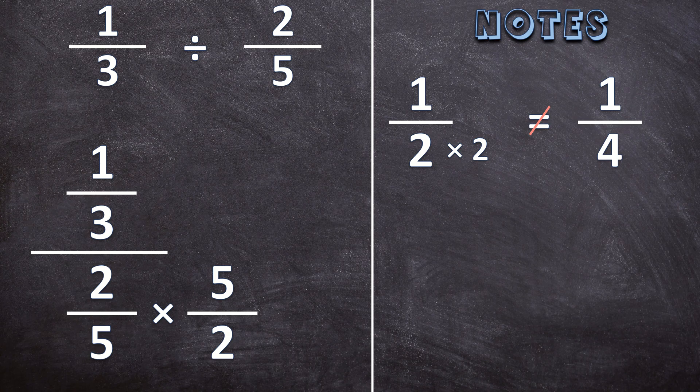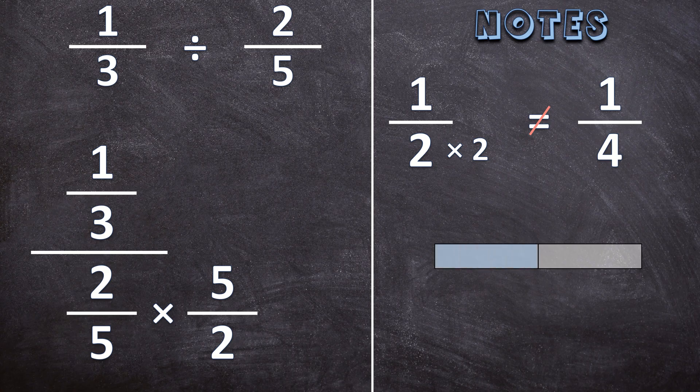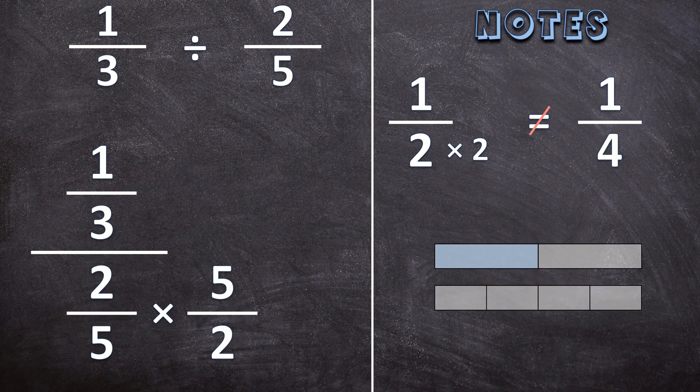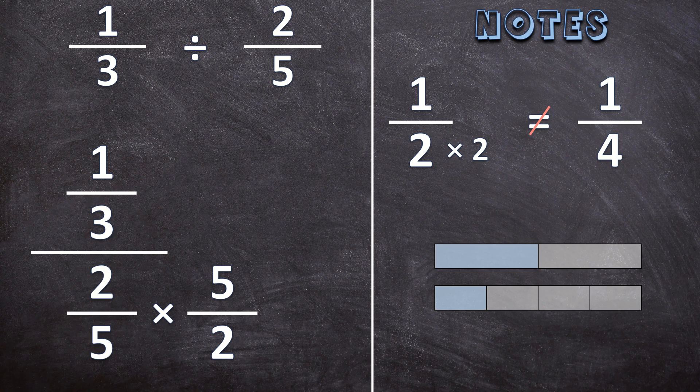Let's have a rectangle. We divide it into two pieces and we color in one of those pieces. And we have a rectangle, the same rectangle. We divide it into four pieces and we color in one of those pieces. You can see that they are not the same. The blue parts are not the same.